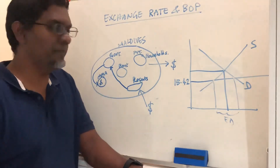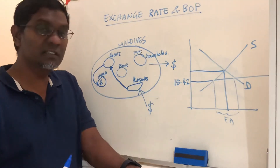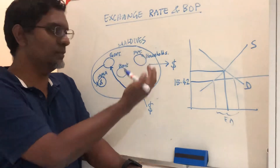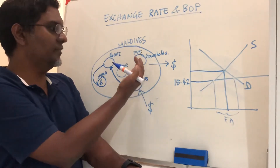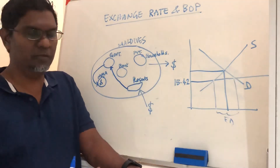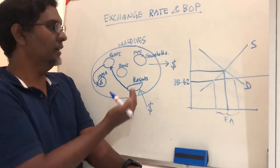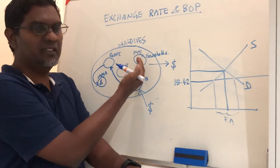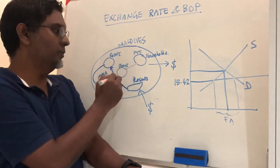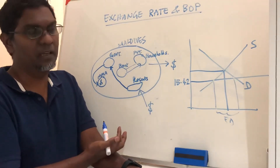The rufiya is spent within the local economy. Since our economy is very much dependent on imports of goods, the private sector and households import goods from the rest of the world. When we import goods, US dollars flow out of the economy, and the private sector provides rufiya to banks to obtain the US dollars needed for imports.